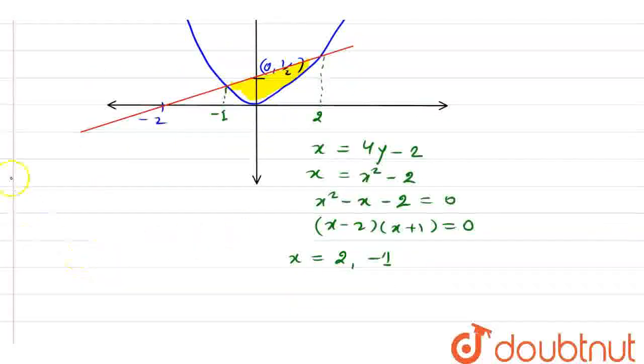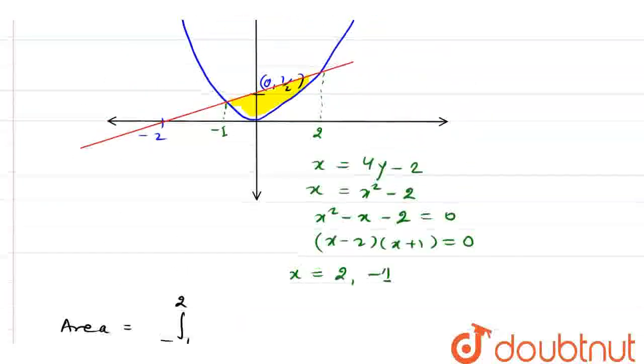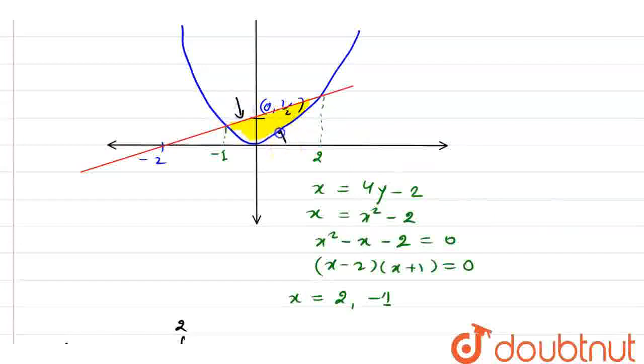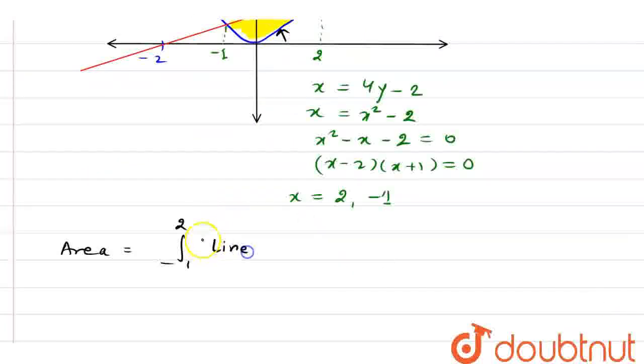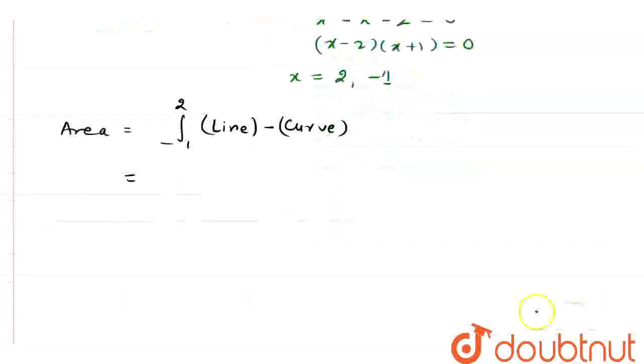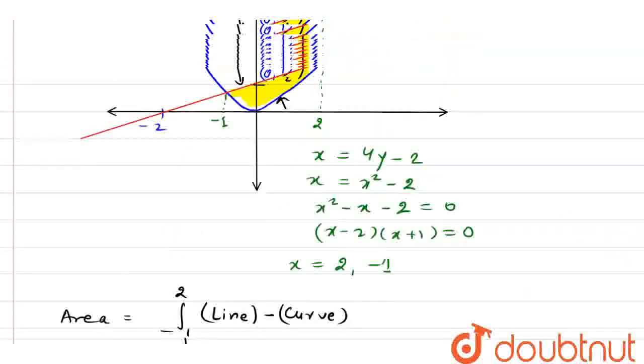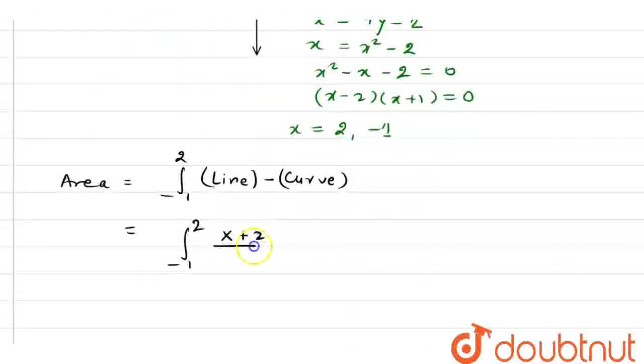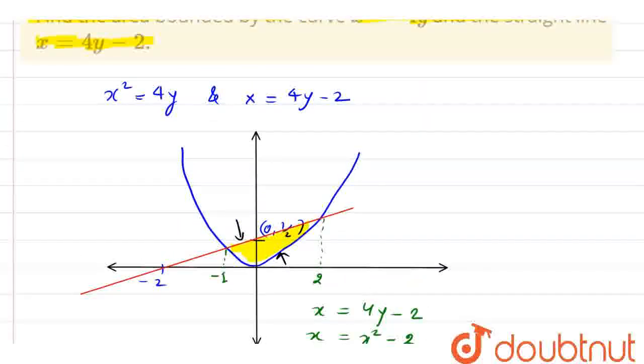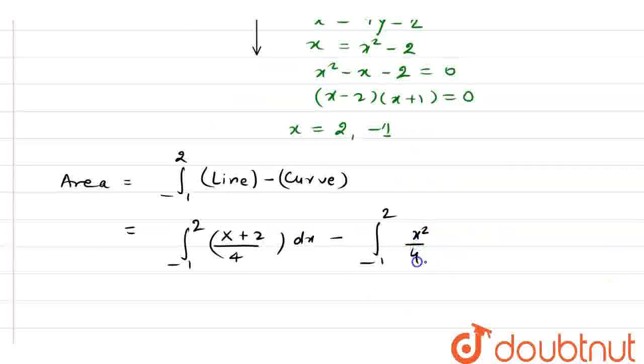Now, for finding the shaded portion, we have to take limit from minus 1 to 2. So, for the shaded region, I have to take limit from minus 1 to 2. And I am going to apply upper curve minus lower curve. And the upper curve is the equation of a line. So, I am going to subtract curve from line. Now, what I am going to do here is, I am going to again take limit minus 1 to 2. And what is the equation of line x equals to 4y minus 2? So, I can simply find the value of y here. And we have x plus 2 by 4 dx minus minus 1 to 2. And what is the equation of curve? And the value of y from the equation of curve is x square by 4 dx.